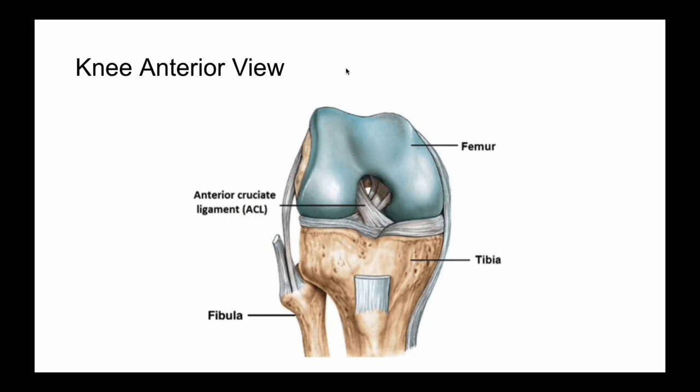As a note, this is not an exhaustive anatomical review — there are other structures of clinical importance, but these are the most common areas to see pathology. One last point: the cut tendon visible here is likely the biceps femoris, which inserts onto the fibular head. It's a common misnomer that the iliotibial band inserts here; the iliotibial band actually inserts into Gerdy's tubercle on the tibia.